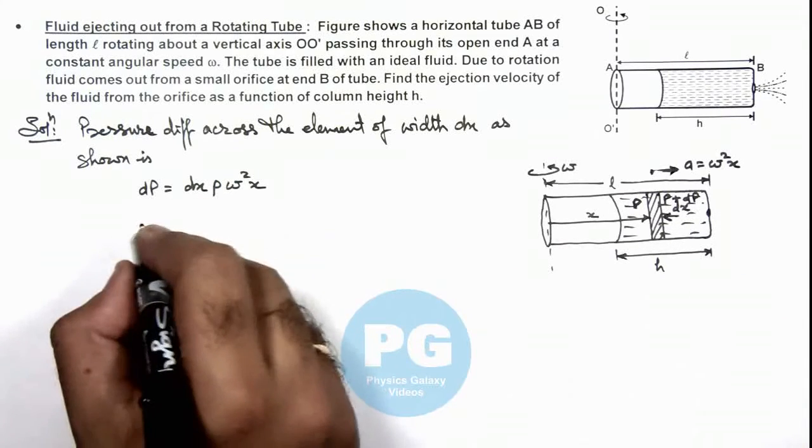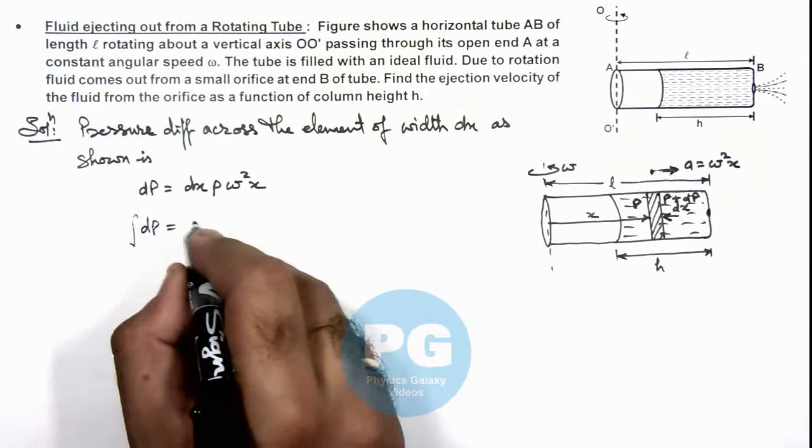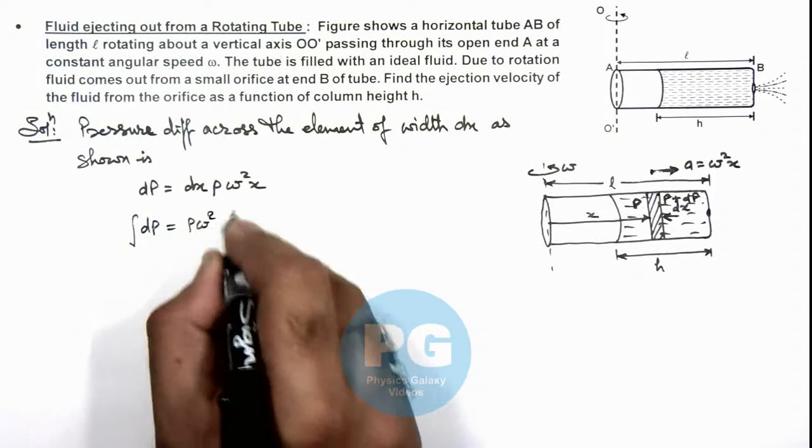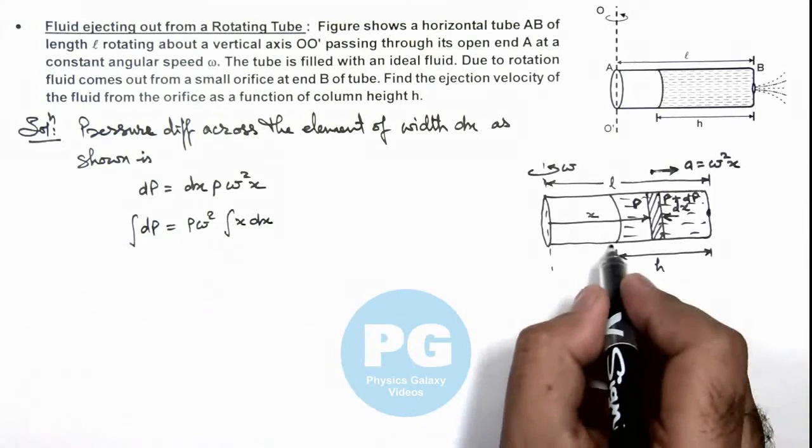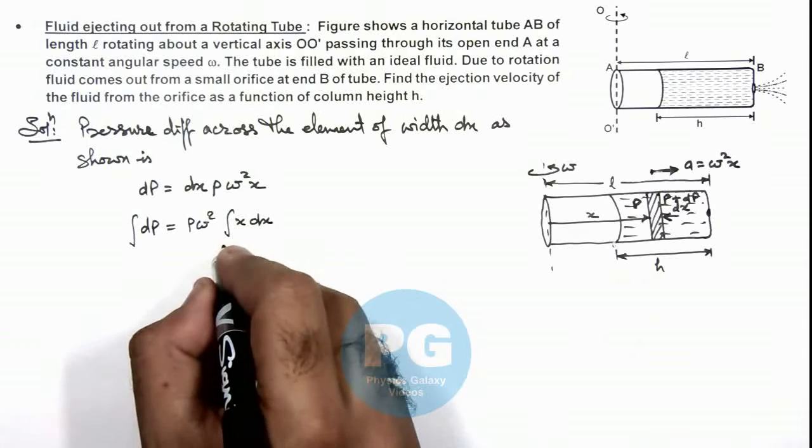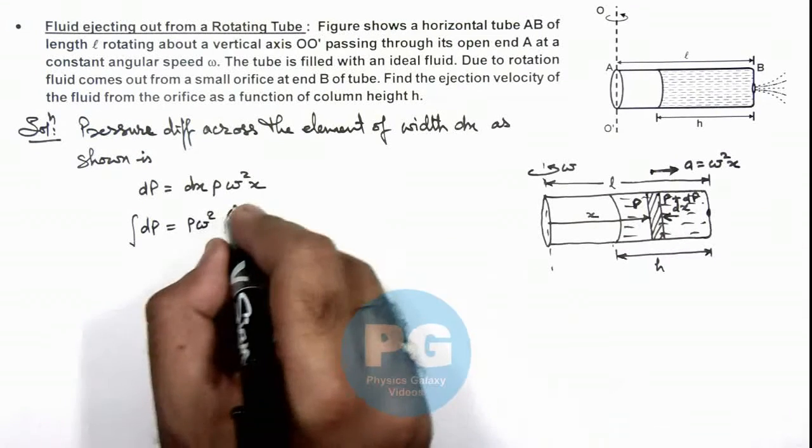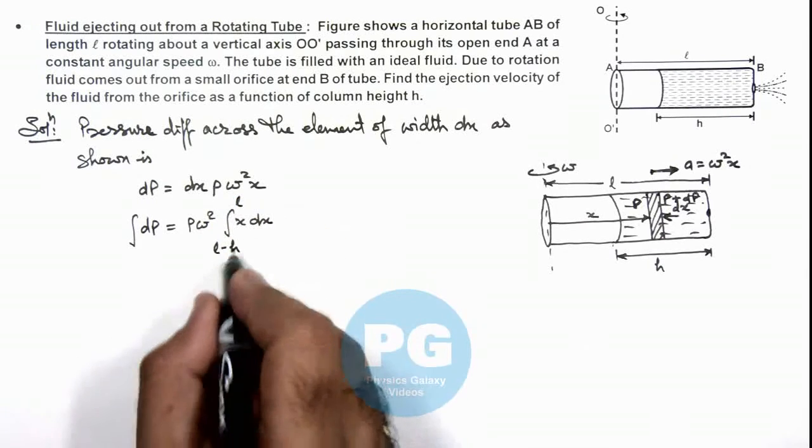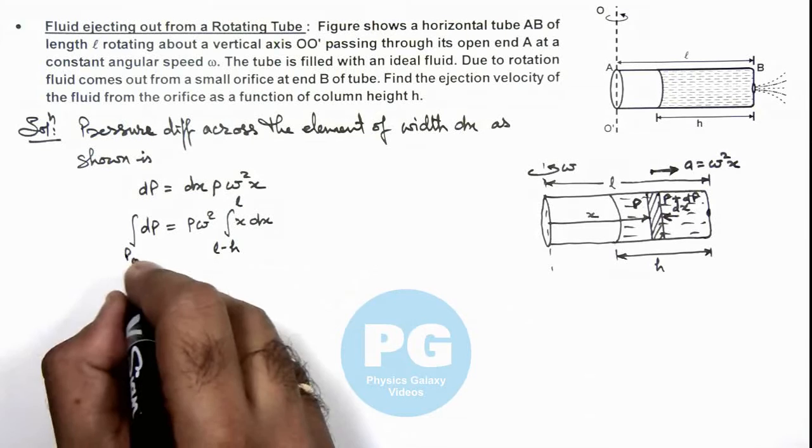So here if we integrate this dP, this will give us rho omega squared integration of x dx, and we can integrate it from this point where the value of x is L minus h to the final end B which is L, and here pressure we can write as P atmospheric which we can write as P_0.